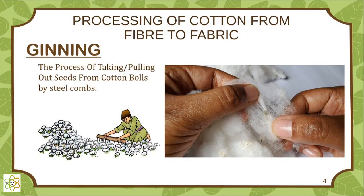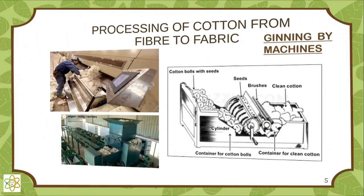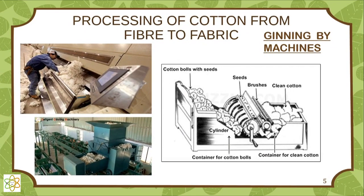Ginning is the process of taking or pulling out seeds from cotton balls by steel combs. As you can see, this lady is taking seeds out of cotton through steel combs, and in another picture, manually by hand. Nowadays machines are used everywhere to take seeds out of cotton.